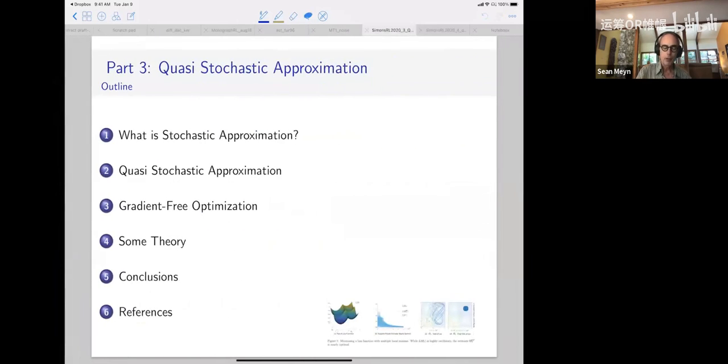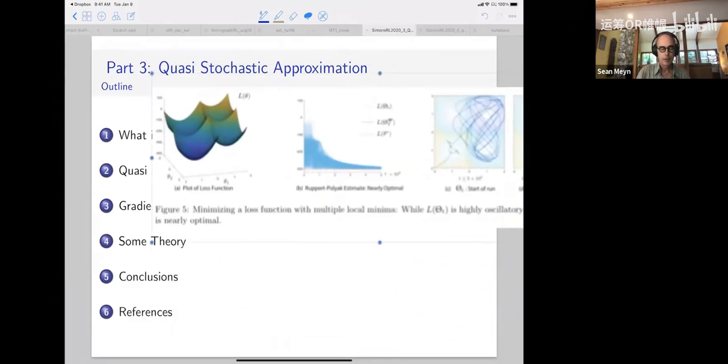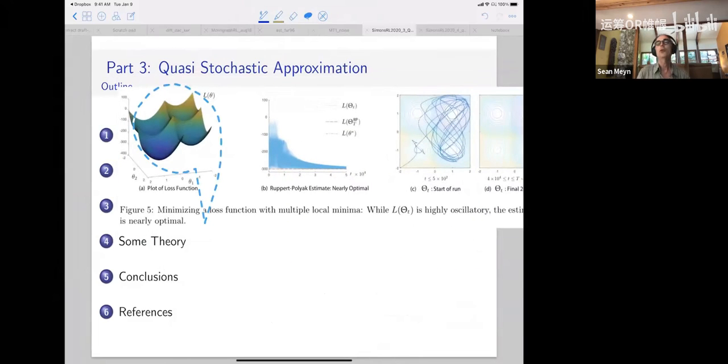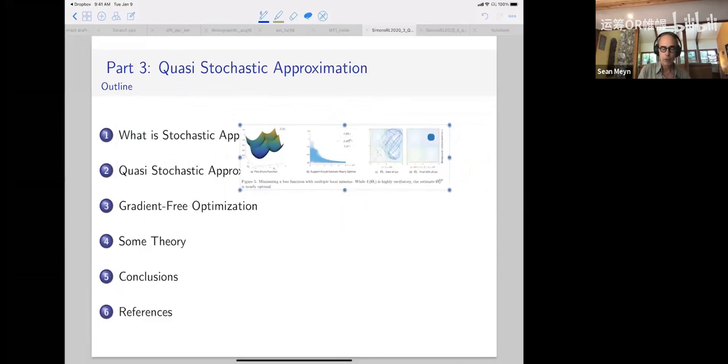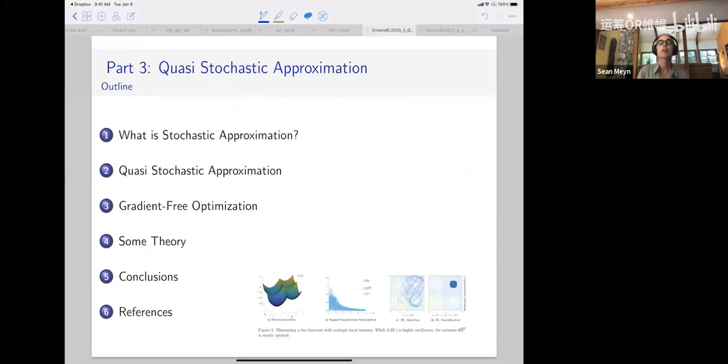So basically what I'm going to do now is in one slide tell you what Stochastic Approximation is, and then Quasi Stochastic Approximation will be obvious. There are applications to gradient free optimization, which come out basically based on Kiefer Wolfowitz's ideas and ideas of Spall. I'll explain plots like this, where I have some non-convex function, and I don't know its gradient, but I'd like to find this global minimum.